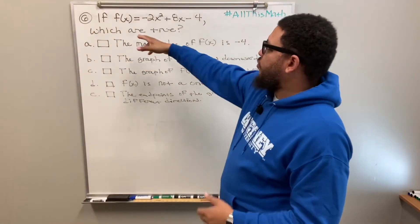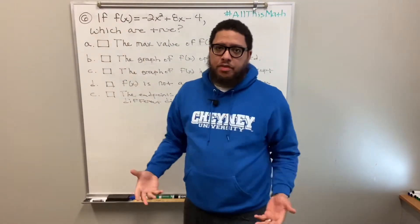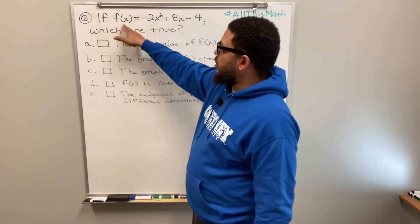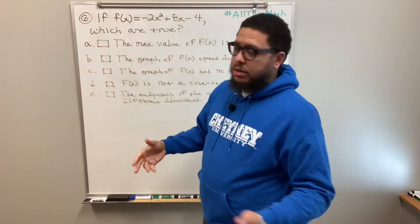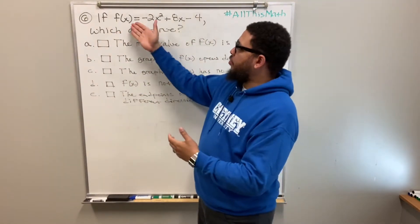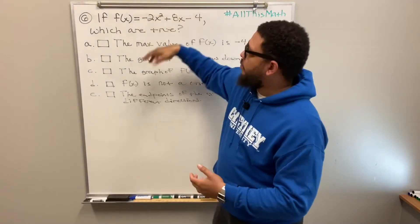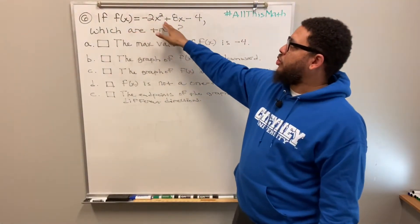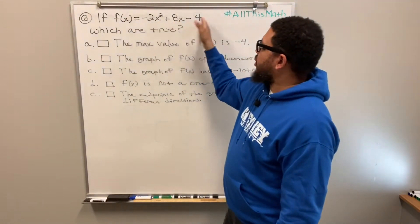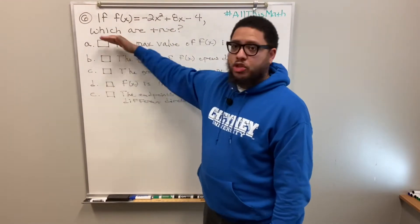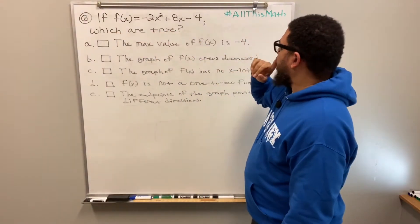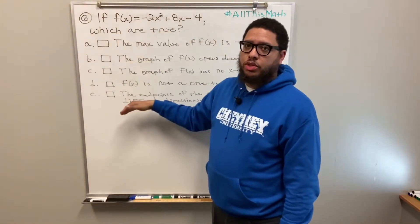So if f of x — f of x is just the name of a function; the letter f basically stands for the word function. When you see the parentheses with the x inside, that means there could be different x values that will determine the value of the expression. So f of x is equal to negative two x squared plus eight x minus four. Which of these answer choices are true? More than one can be true.